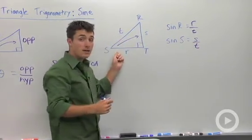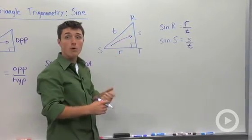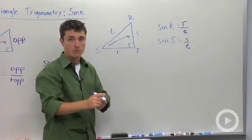So notice that your sine can change depending on which vertex you choose, but it will always be the ratio of the opposite side to the hypotenuse.